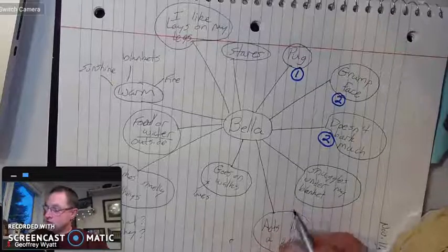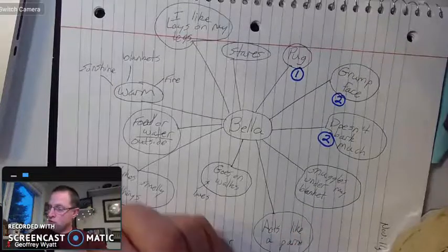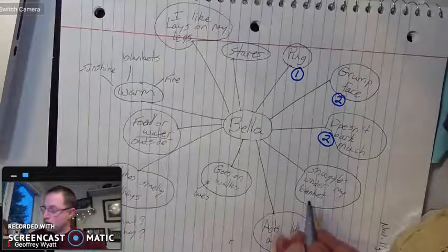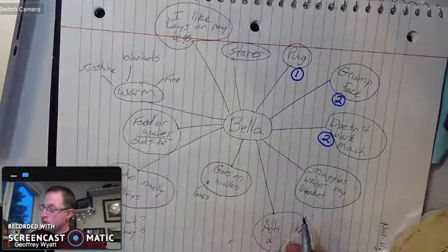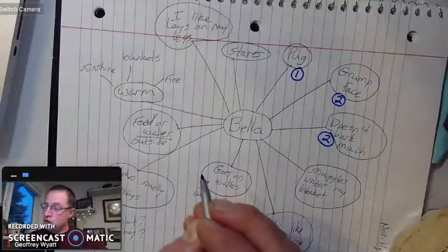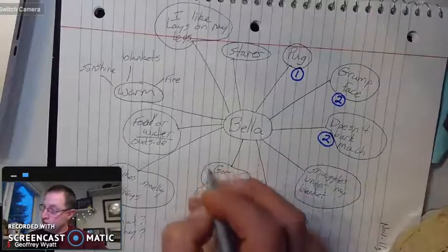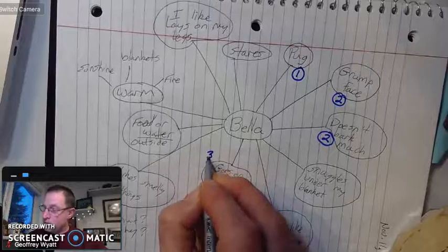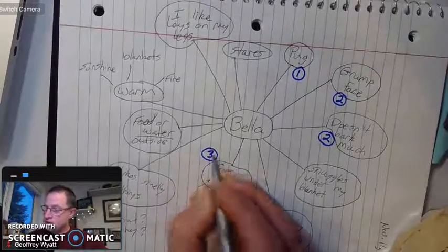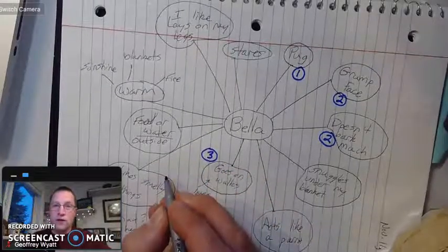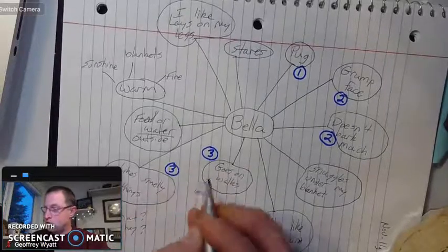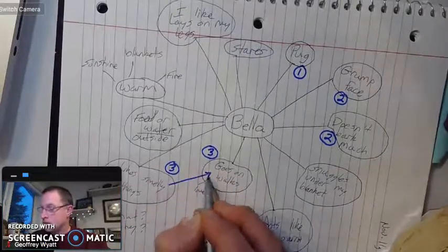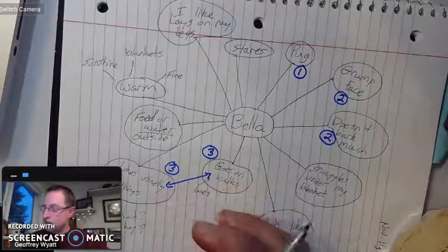The next thing I'm going to do is think about, I'm just going around the circle here because I know this is how I wrote it, but I might skip a few of these. She likes to go on walks. So maybe this might be my third sentence. And when she goes on walks, she likes to smell things that are kind of smelly. So I'm going to put those two together. Sometimes I'll even make a little arrow like this to connect things together.